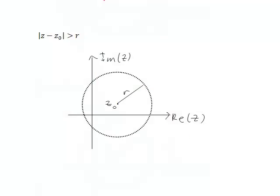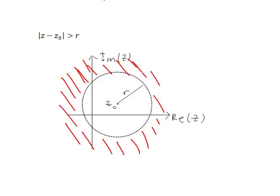Finally, for |z - z₀| > r, we shade the parts of the complex plane outside the circle. Because it's strictly greater than r, the boundary of the circle would be dotted to show it is not included.